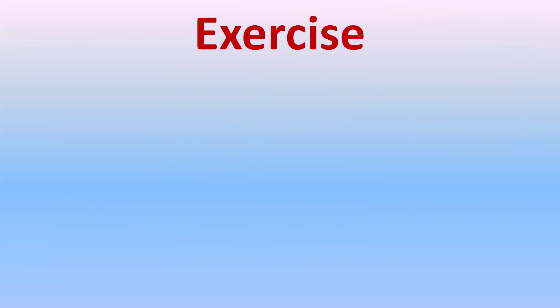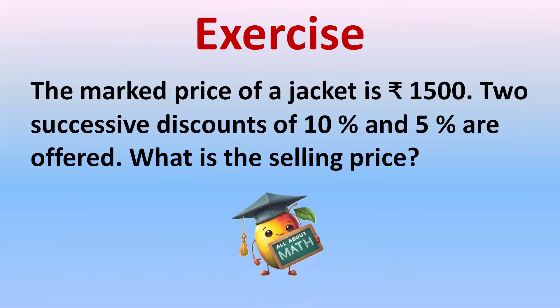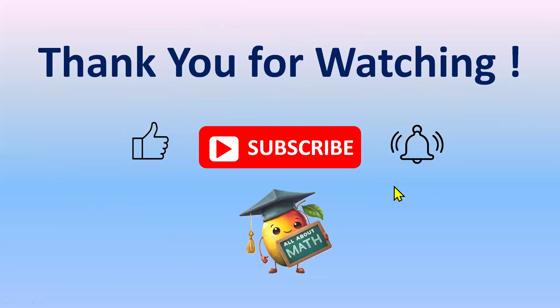Here is an exercise for you: the marked price of a jacket is 1,500 rupees and two successive discounts of 10% and 5% are offered. Find the selling price. First find 10% of 1,500, then subtract to get the reduced price, then find 5% of that reduced price to get the final selling price. Thank you for watching — please subscribe, like, and hit the bell icon for notifications of upcoming videos.